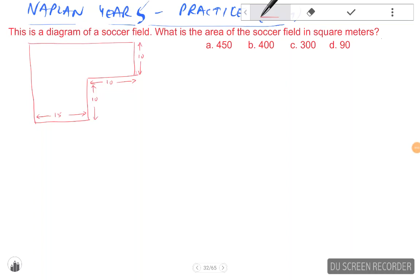Okay, here is an interesting problem which will help us think about how to calculate the area of a given diagram. So the question is: this is a diagram of a soccer field, what is the area of the soccer field in square meters?